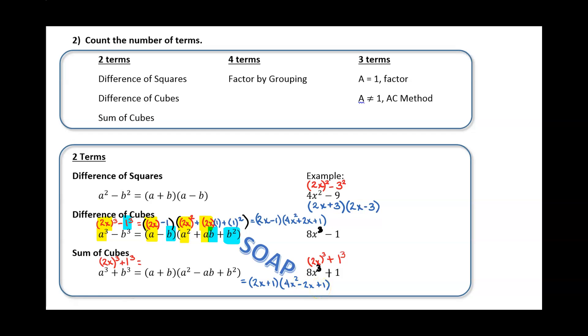So if you take out your greatest common factor and you have two terms, the only way that you could factor this down any further is if it were a difference of squares, a difference of cubes, or a sum of cubes. If it's not one of those three things, you're done. It won't factor any further. In our next video, we're going to look at the following two scenarios: what if you have four terms and what if you have three terms?